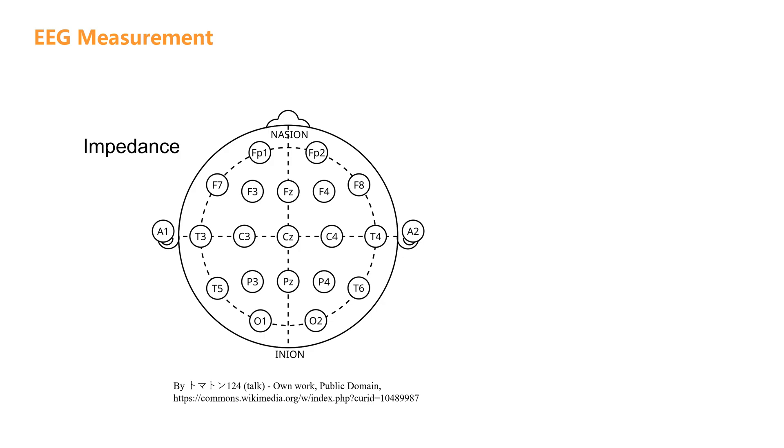Now, let's explain impedance. EEG impedance refers to the resistance between the electrodes and the scalp, and it is an important factor that affects the quality of EEG signals. The magnitude of the impedance can influence the efficiency and quality of signal transmission.